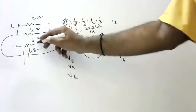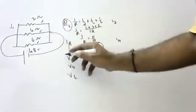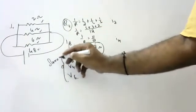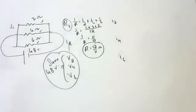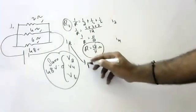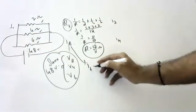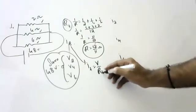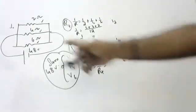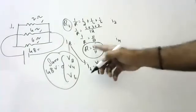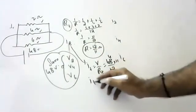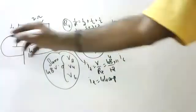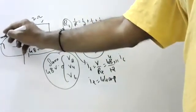In parallel, potential across each resistor is the same — 48 volts. Total current I = V/R = 48 ÷ (12/11) = 48 × 11/12 = 44 amperes of current is flowing in the circuit.